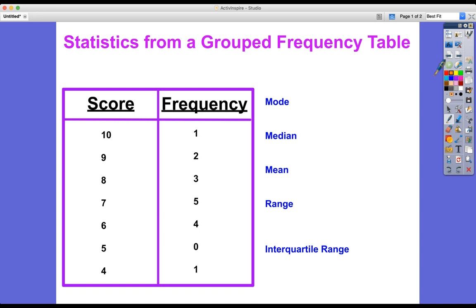Now the first of these statistics, the mode, is the easiest one to spot. Remember that the mode is the most common score in this case. So we're looking for the one that has the highest frequency. Let's look for the highest number in this list. It's number five. So the score of seven was achieved by the highest number of people.